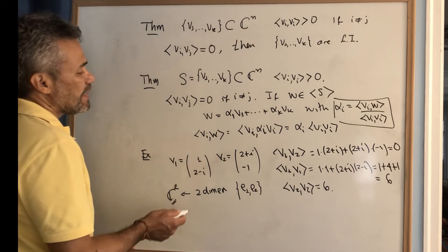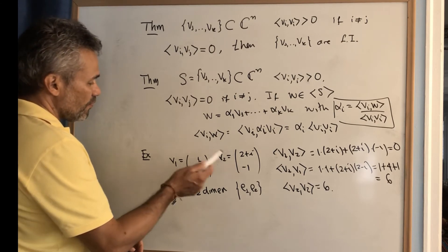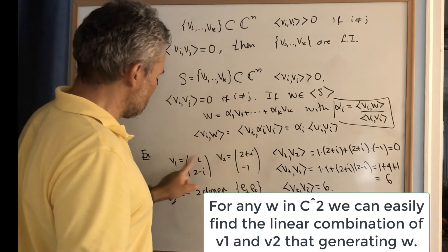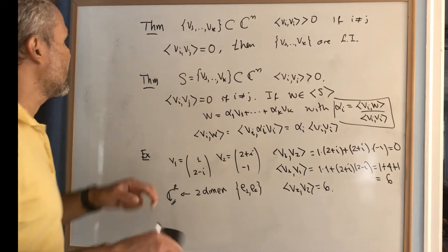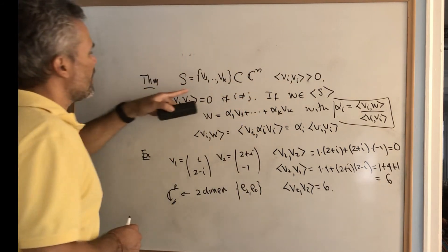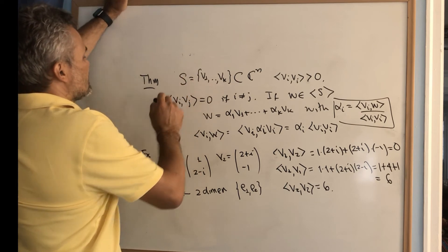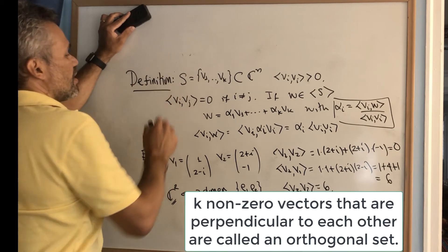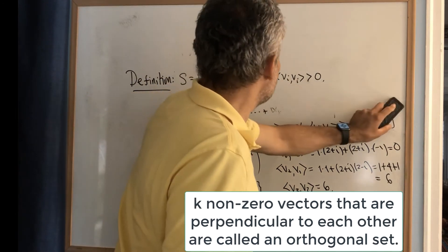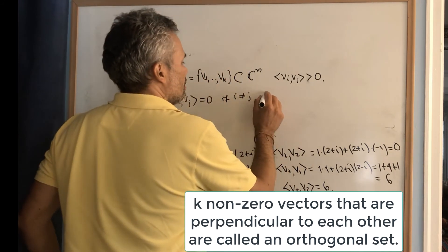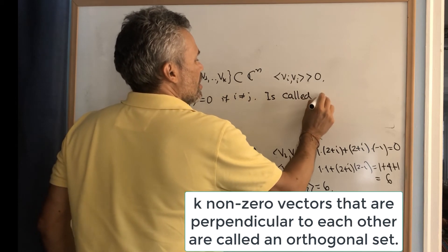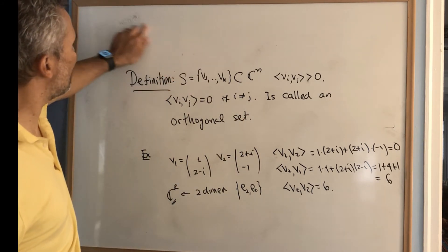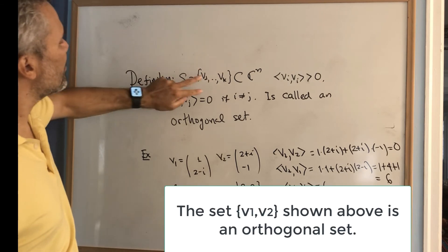We can pick any vector w in C² and write it as a linear combination of these two vectors. Before we do that example, let me write the definition: a collection of vectors satisfying these conditions — all non-zero and mutually perpendicular — is called an orthogonal set.